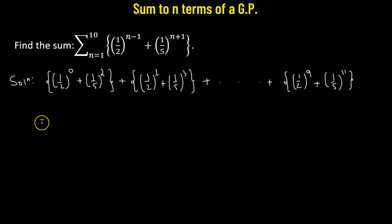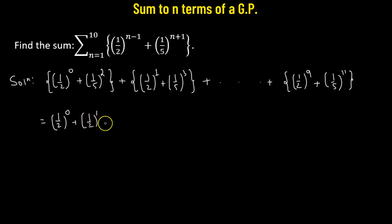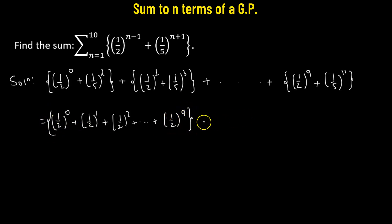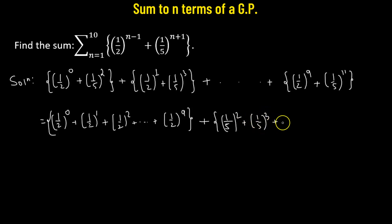Now we will combine the first sub-term of each term, meaning we have one-half raised to the power of 0, plus one-half raised to the power of 1, plus one-half raised to the power of 2, and this goes all the way up to the last term, which is one-half raised to the power of 9. Then we have all the second sub-terms combined: 1 over 5 squared, plus 1 over 5 cubed, and this sums up to the last term, which is 1 over 5 raised to the power of 11.